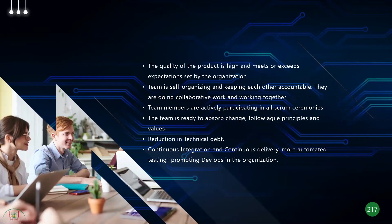The quality of the product is high — it meets or exceeds expectations. The team is able to self-organize, keep each other accountable, and they're not completely dependent on the Scrum Master. They're doing collaborative work, actively participating in all Scrum ceremonies, absorbing change, following agile principles, being transparent, reducing technical debt, doing continuous integration and delivery, automating testing, and promoting DevOps in the organization.